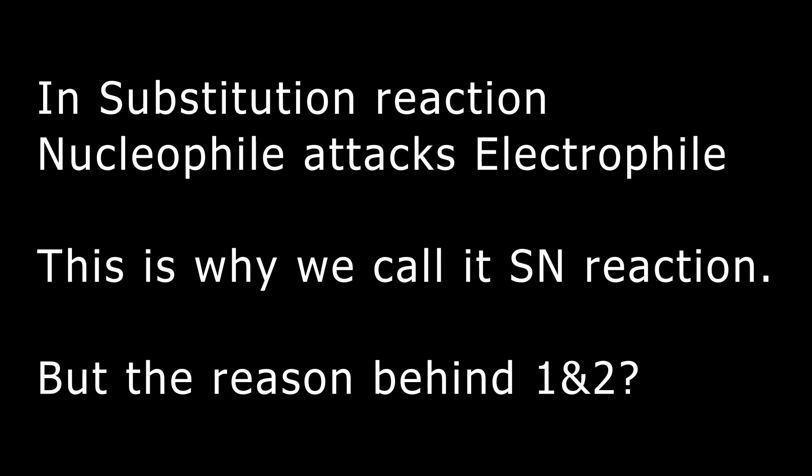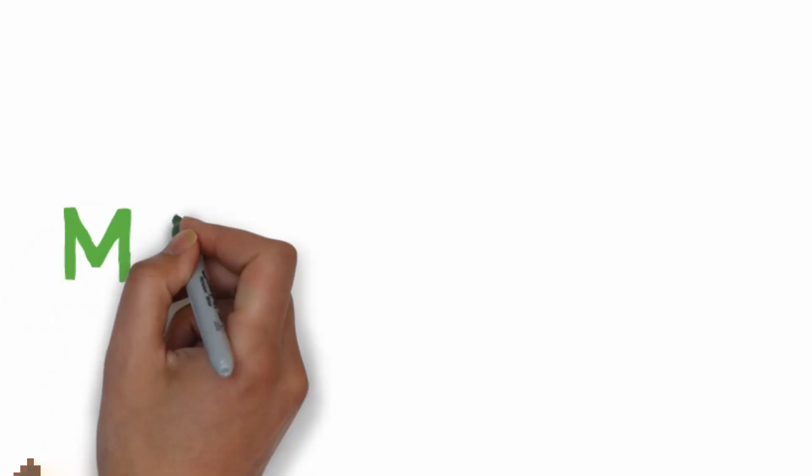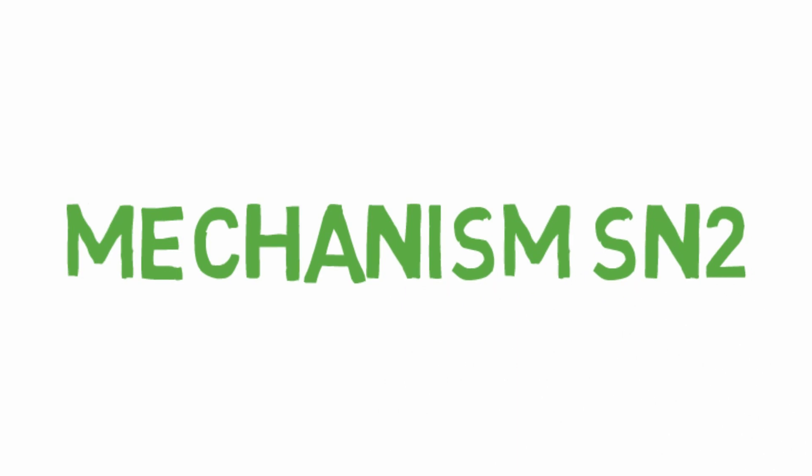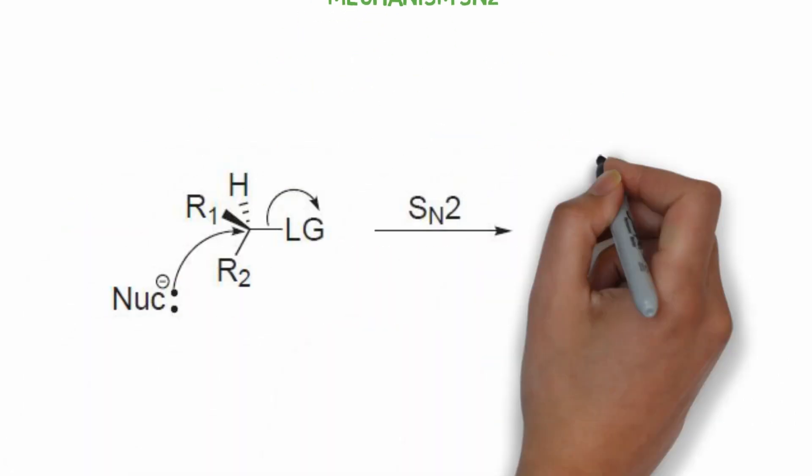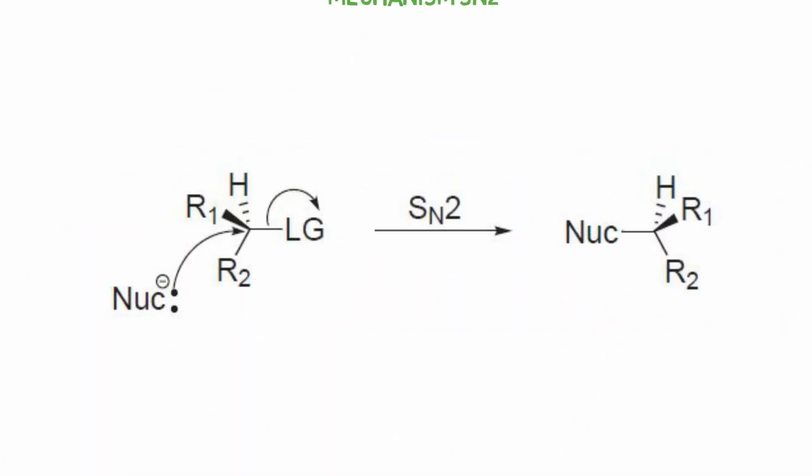Now why 1 and 2? Well, to know that, we have to go through the mechanism. The nucleophile on the left-hand side is attacking the electrophilic carbon, which is attached to a leaving group. Leaving group is any group that is willing to be kicked off. Usually, leaving group is electronegative, which is why the carbon is electrophilic.